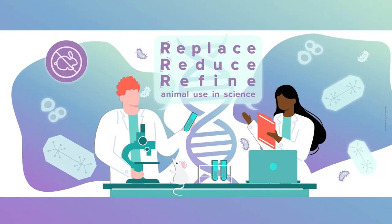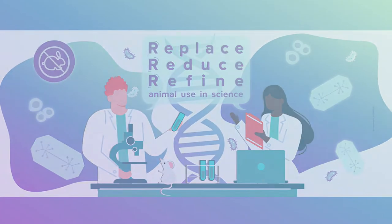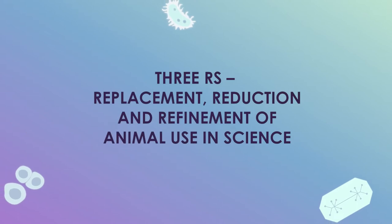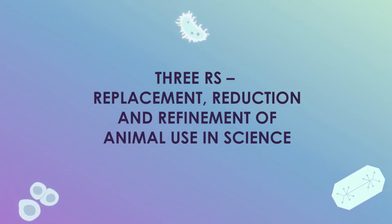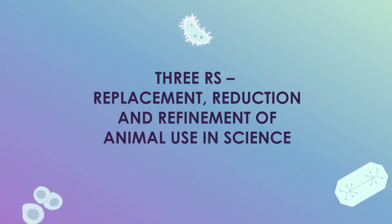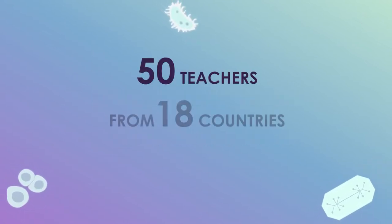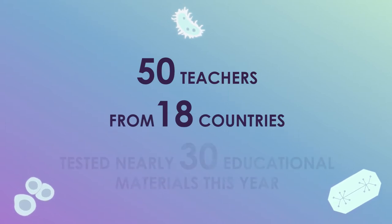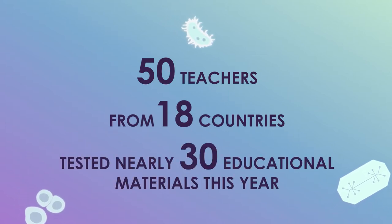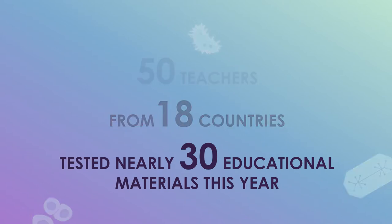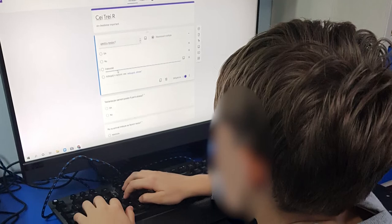The European Commission's Joint Research Centre is working on introducing the principles of the 3Rs – replacement, reduction and refinement of animal use for scientific purposes in primary and secondary education. Teachers across Europe and beyond, coordinated by the European Schoolnet, have tested the newly developed 3Rs learning scenarios and additional resources. In this video, teachers will share their impressions and recommendations from the experience.